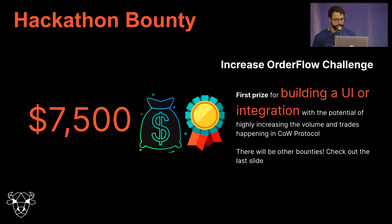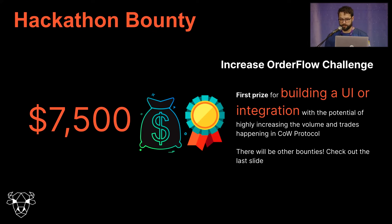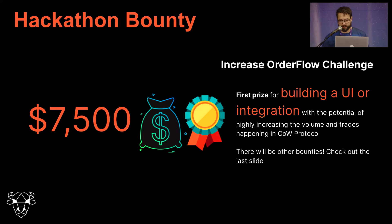What we want to present today is this challenge. We created this hackathon bounty to build a UI or an integration, and the prize is $7,500. The goal is to increase order flow — to build something with the potential to highly increase the volume and trades happening in COW protocol. There will be other bounties too, so please check out the last slide.